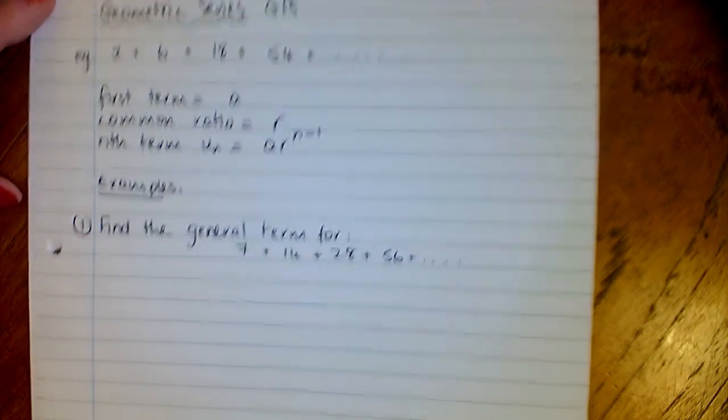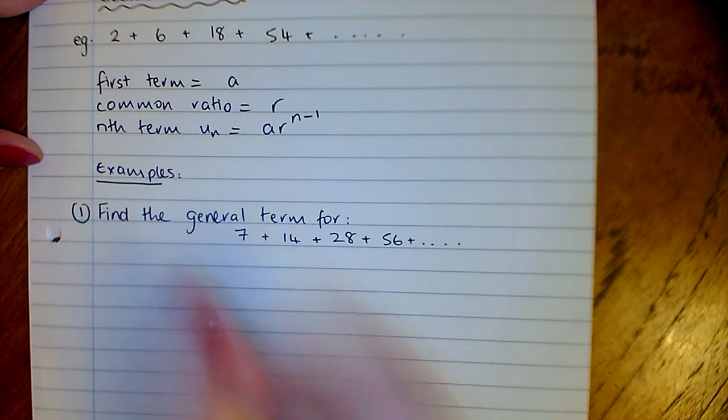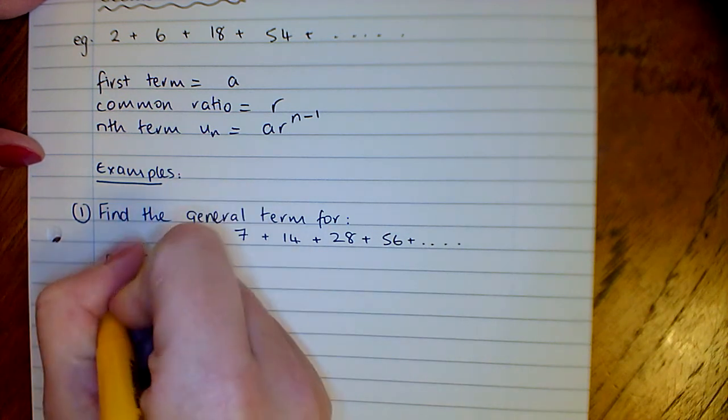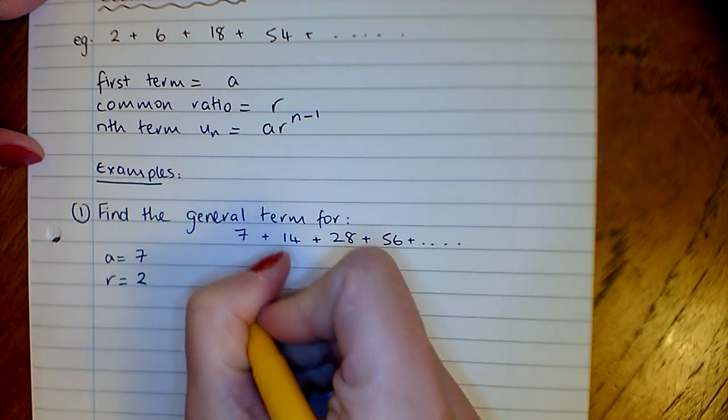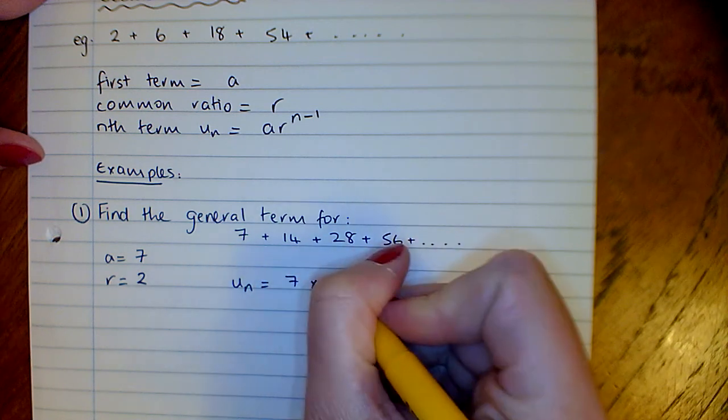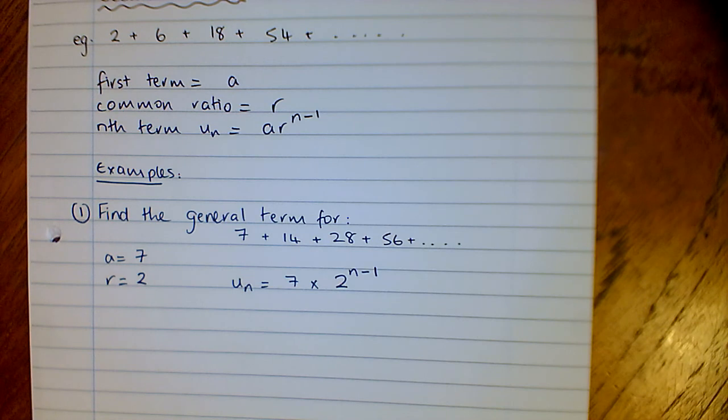Our first question then. Find the general term for 7 plus 14 plus 28 plus 56. We can see straight away it's a GP, not an AP. Our first term A is 7, and our ratio is 2. So our nth term is going to be 7 times 2 to the power of n minus 1, and that's the general term for that series.